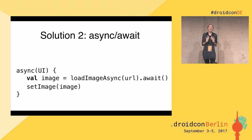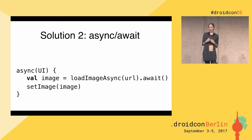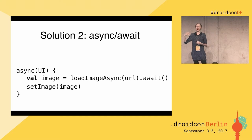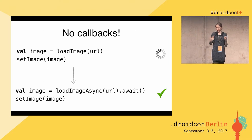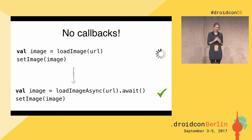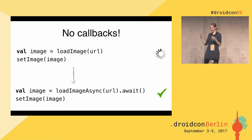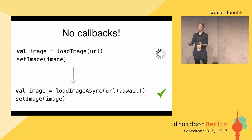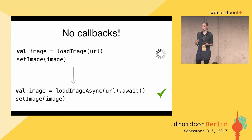Async/await provides another solution to the same problem. Instead of using callbacks, you can just await the computation. You can say: at this point, I will await this time-consuming computation on my general thread — so there's no callback. Our goal is to avoid callbacks and provide a more direct way to do asynchronous programming.